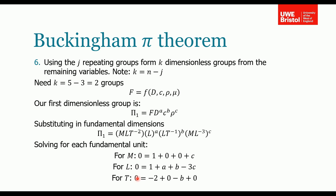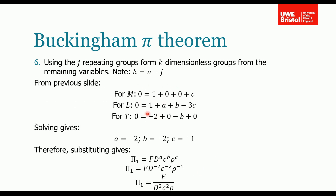Solving the three equations, we find A equals −2, B equals −2, and C equals −1. Substituting back into the original expression, we get our first dimensionless pi group, Pi₁, which written in conventional form is the force divided by diameter squared times velocity squared times density — i.e., F / (D² V² ρ).